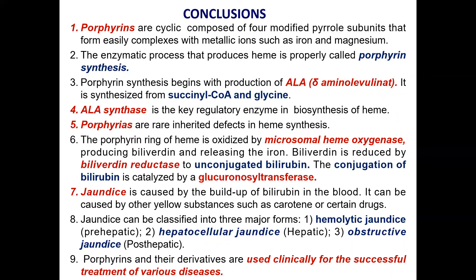In this lecture, we have considered the structure of porphyrins, the synthesis and catabolism of heme, the regulation of this process, disorders of heme synthesis, the metabolism of bilirubin, and porphyrins and their derivatives which are used clinically for the successful treatment of cancer.